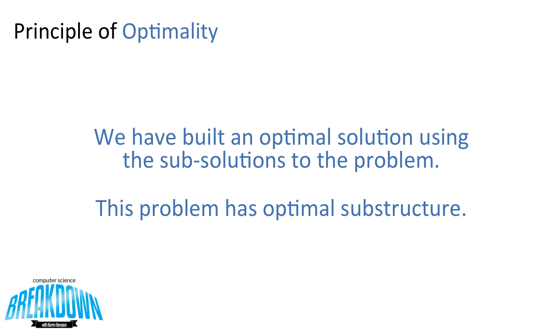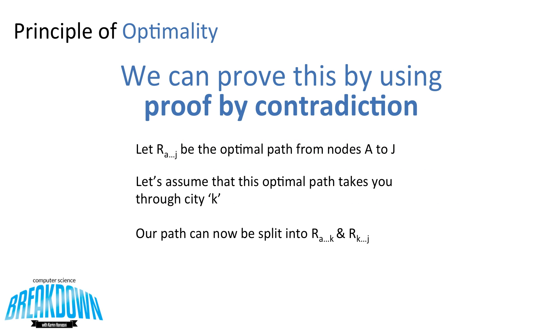So we've built an optimal solution, in this case, two optimal solutions using the subproblems to the problem. This problem has optimal substructure, but we want to define it using a proof. So we'll do that by using a proof by contradiction.